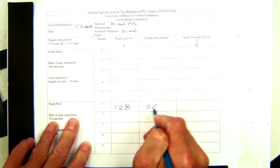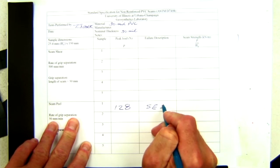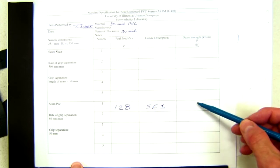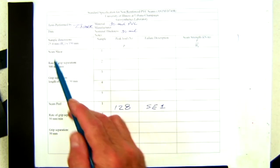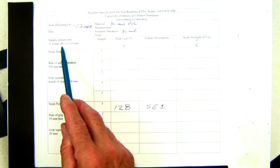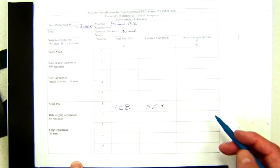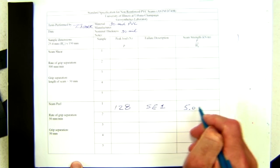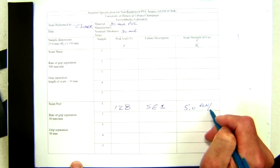And then, the last piece of information is calculating the seam strength, which is 128 newtons divided by the initial width of the specimen, which is 25.4 millimeters, as shown here under sample dimensions, W0. That yields a seam strength of 5.0 kilonewtons per meter.